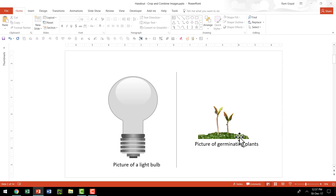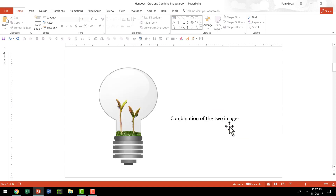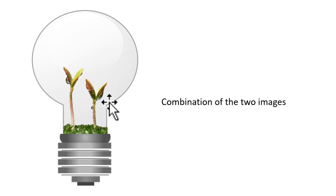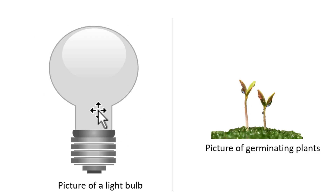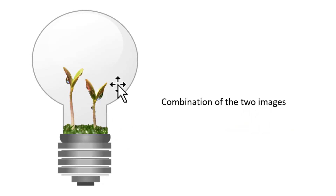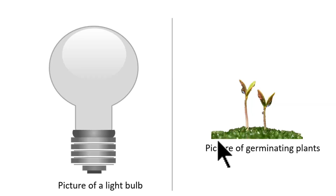And then I looked for a picture of germinating plants. These are fairly easy to get. Now when I combine the power of a diagram that I created on my own with this picture, I can come up with something as interesting as this. All I need to do is to take this crop from both sides and then fit it exactly here. It is a combination of two images — one that is drawn by me and the other that I picked from the net.